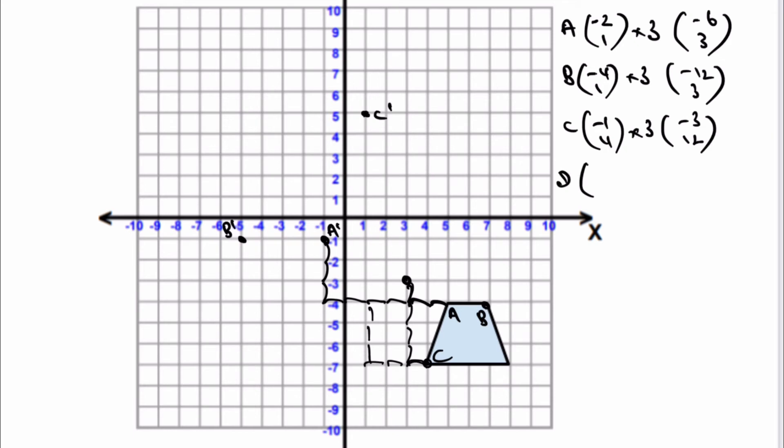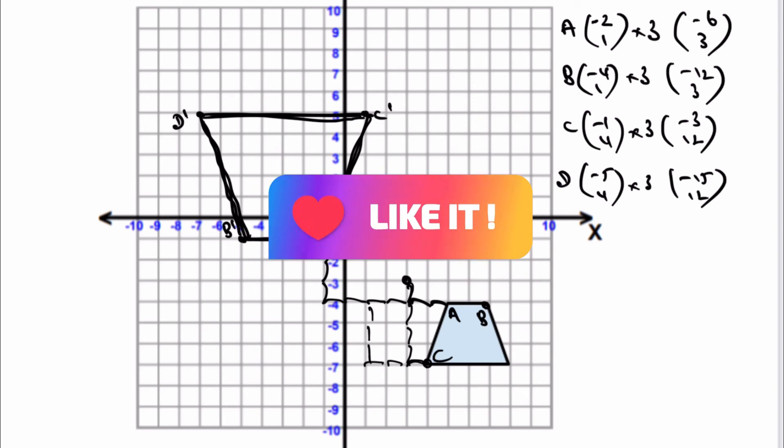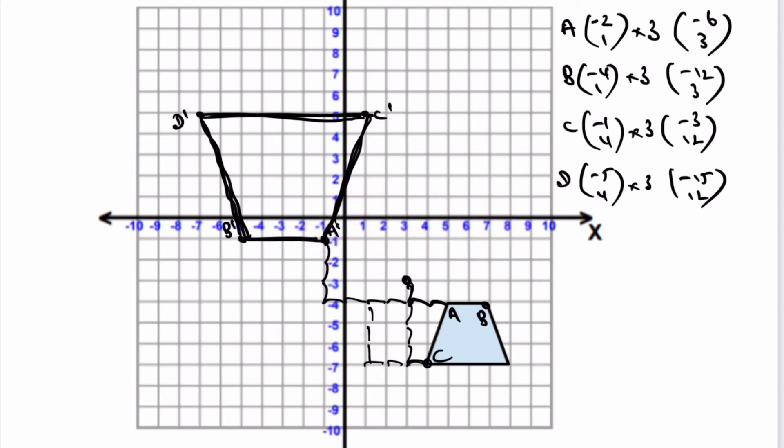So D at the moment, my vector is going to be minus five, four. I'm going to multiply that by three and that's going to give me minus 15, 12. That will place my point D prime at minus seven, five, which is going to be over here. And then when I actually draw this enlargement, I'm going to get something that looks a little bit like that. With all of these, we generally tend to use vectors and we're showing a movement on the grid itself.